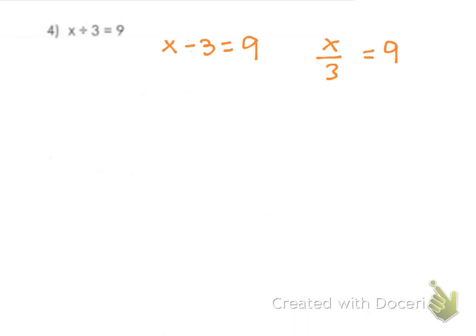So when we are solving for an equation, we want to get x by itself. We're going to start by drawing our line down. Whatever we do to one side of the equation, we have to do to the other. So to undo division, we are going to multiply.